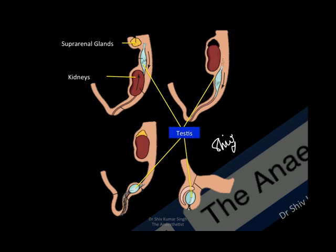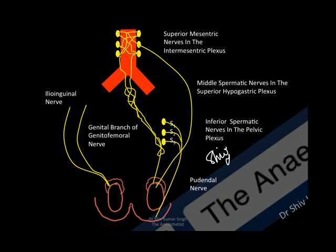As the fetus matures, the testis descends into the scrotal sac. The scrotal sac itself derives its innervation from the ilio-inguinal and genitofemoral nerve anteriorly, whereas the posterior part of the sac is innervated by the perineal branch of the pudendal nerve. This is depicted in a schematic diagram showing sympathetic innervation from T10 and L2, and nerve supply to the scrotal skin from the ilio-inguinal nerve and genital branch of the genitofemoral nerve anteriorly, and the perineal branch of the pudendal nerve posteriorly.